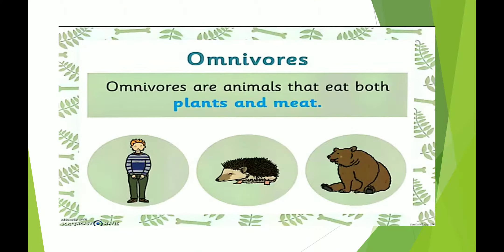Omnivorous are animals that eat both plants and meat. Human beings are omnivorous — they eat meat as well as green vegetables. Crow and bear are also omnivorous, as they eat both plants and animals.